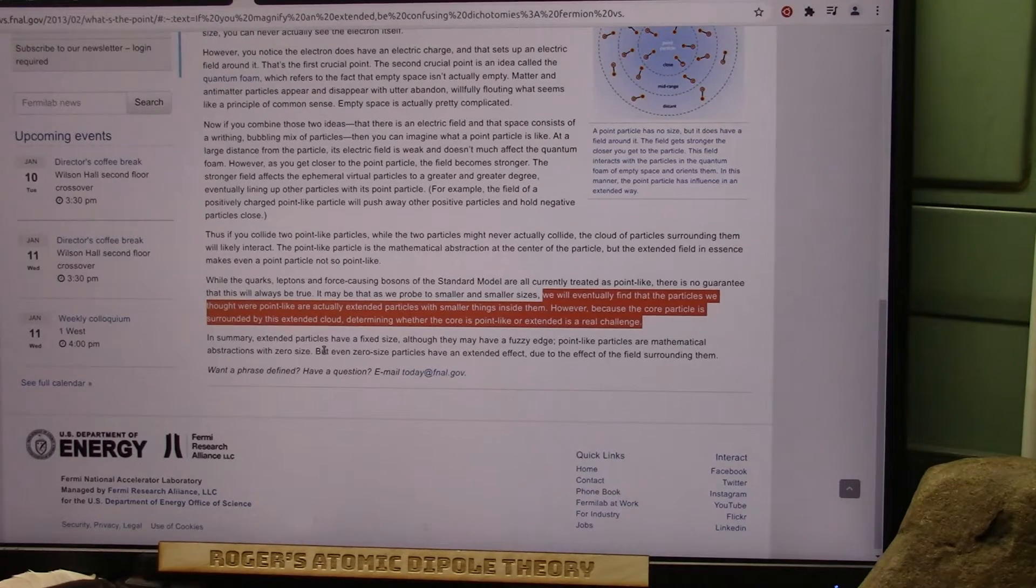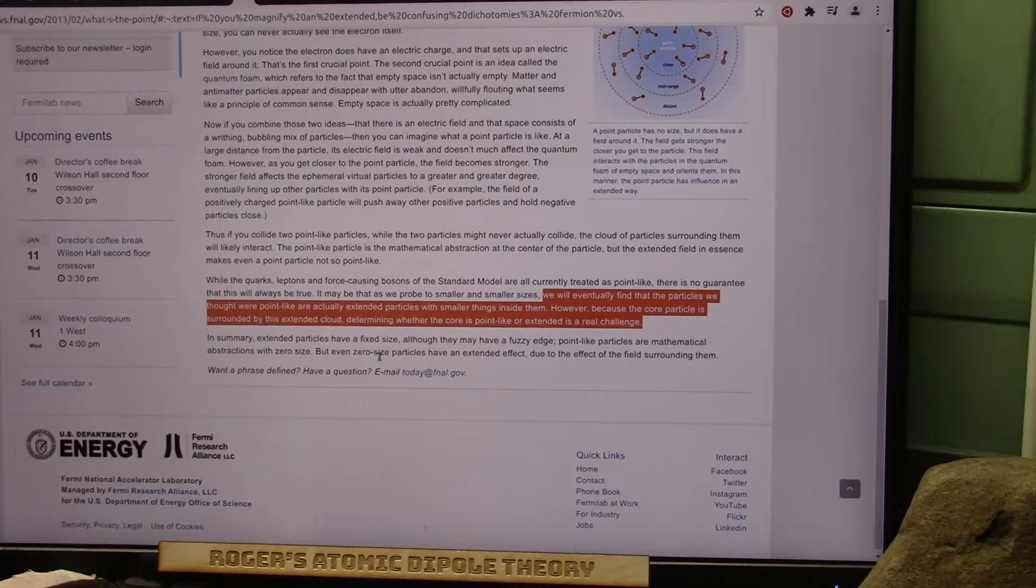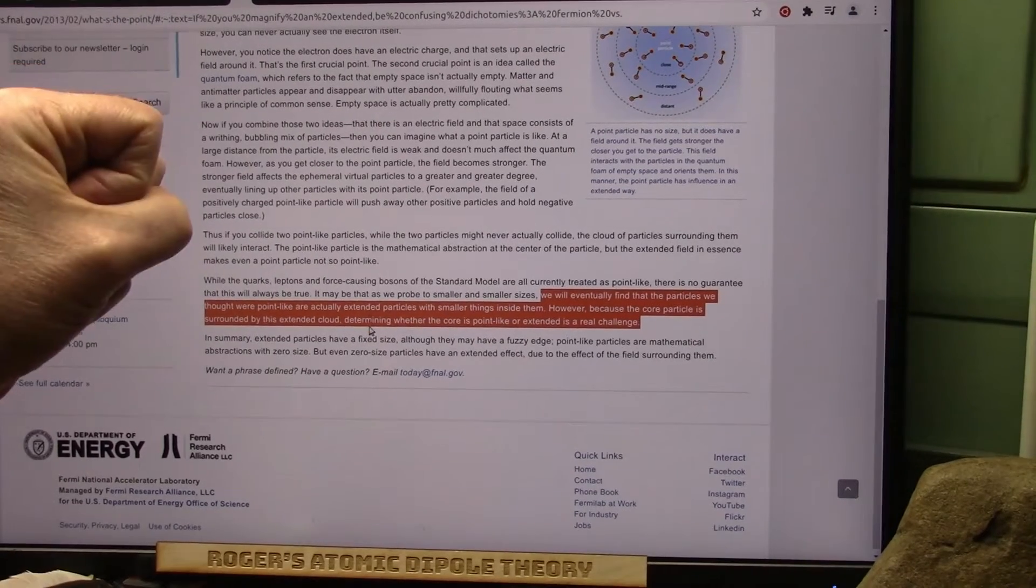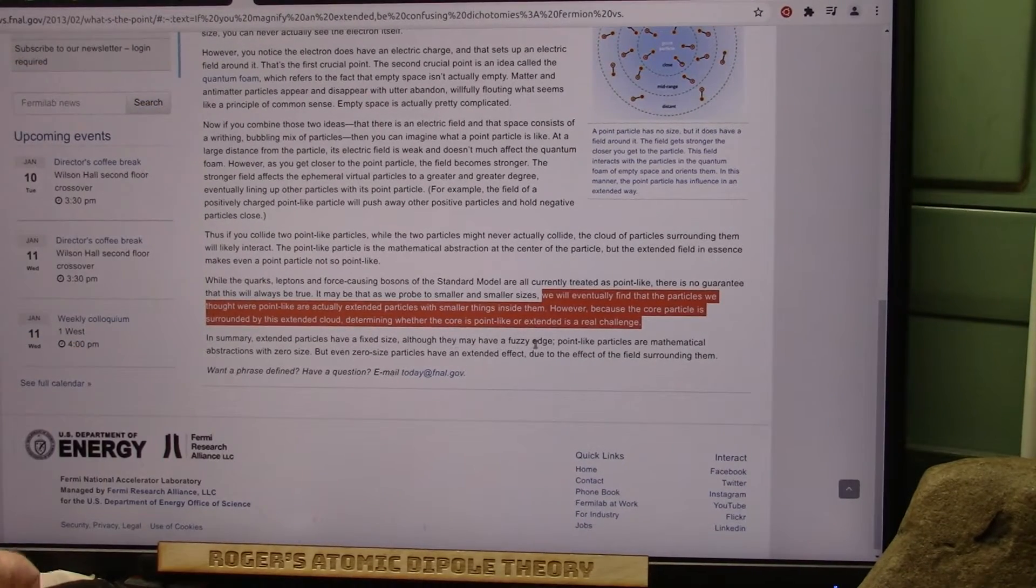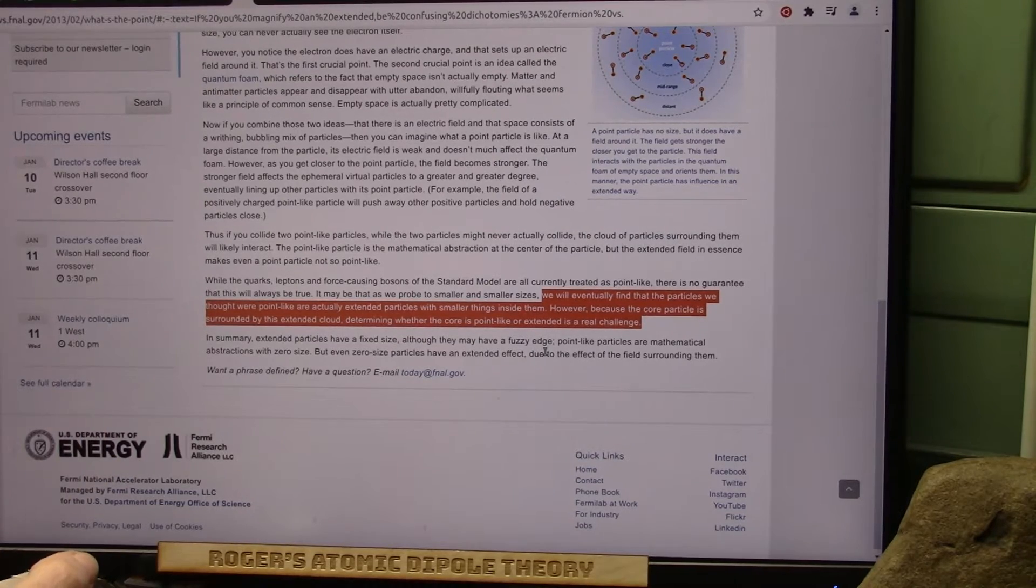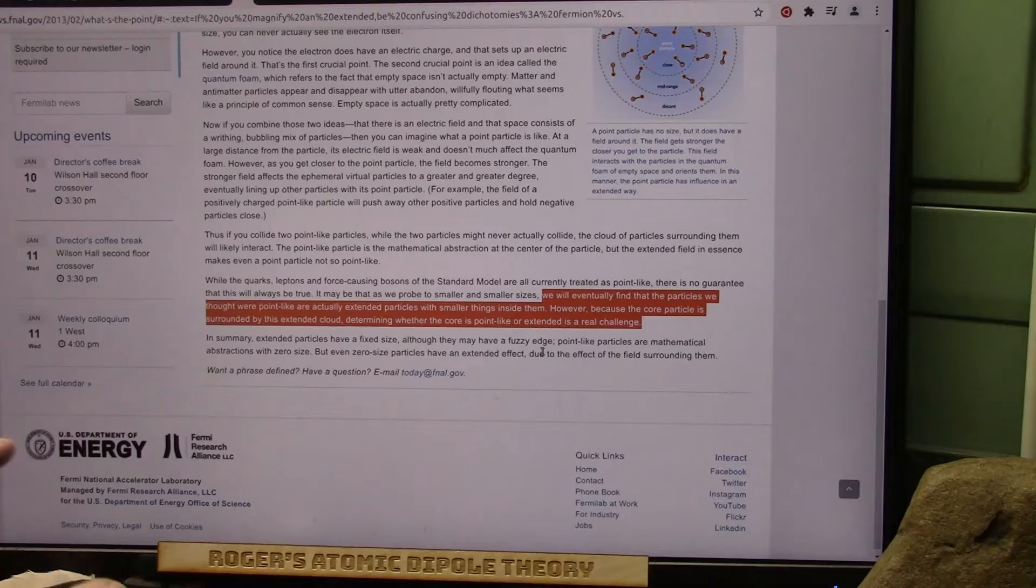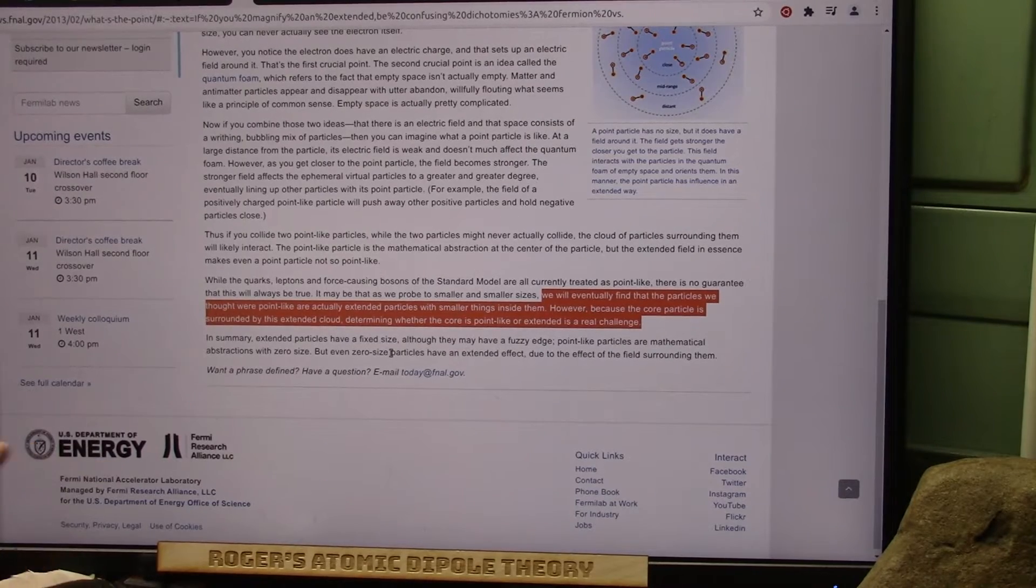In summary, extended particles have a fixed size. They're just one big bowling ball, although they may have a fuzzy edge, but they're still one-size-fits-all. The point-like particles are mathematical abstractions, and he's saying they have zero size.